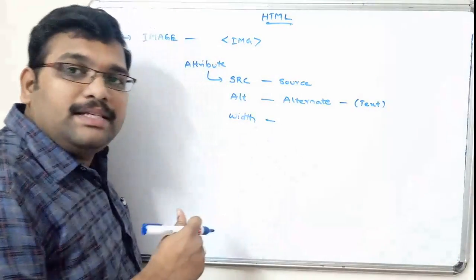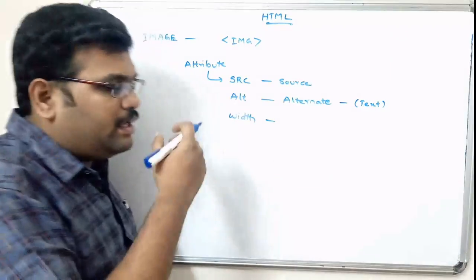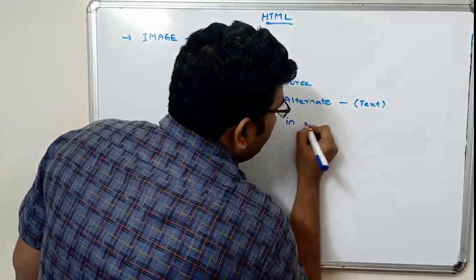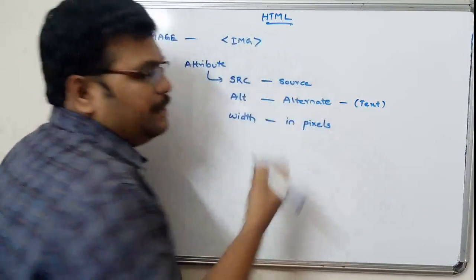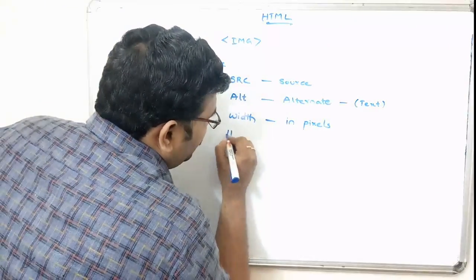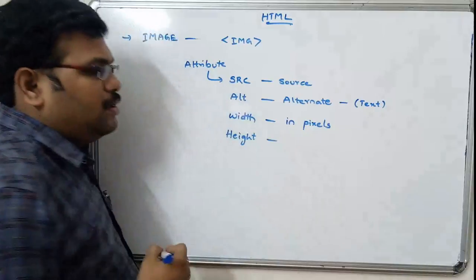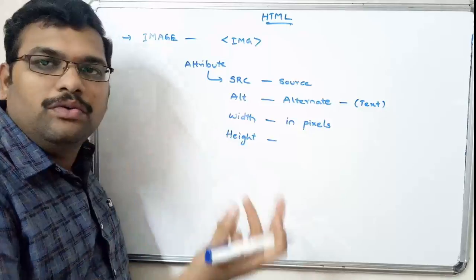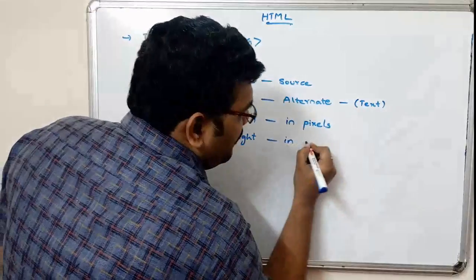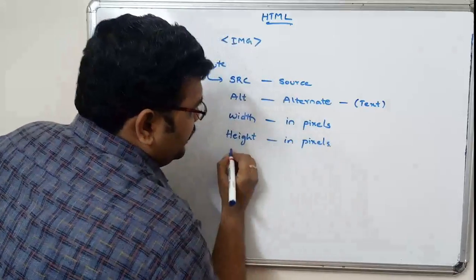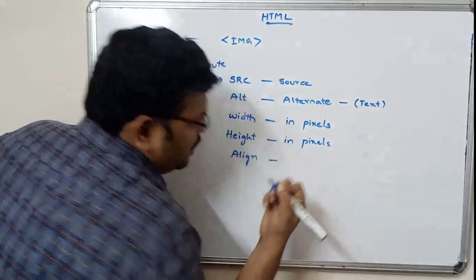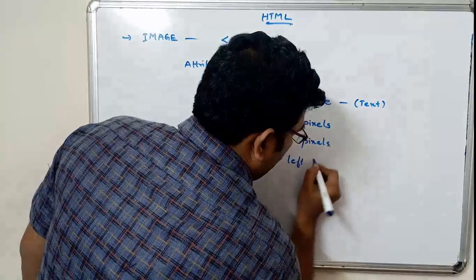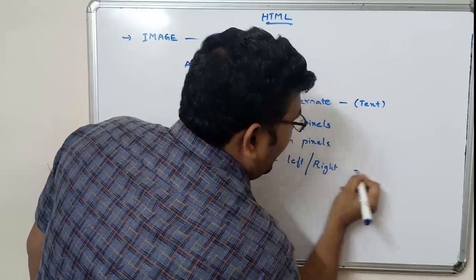Width specifies the width of the image to be displayed on the screen, and this must be in pixels. Similarly, height is used to set the height of the image we want to display on the screen — this is also in pixels. Next, align specifies the alignment — whether we want to display the image on the right side or the left side.